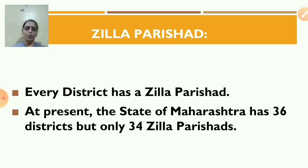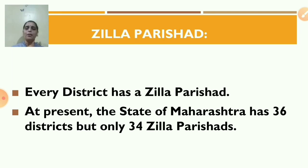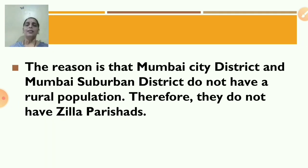And today we are going to learn Jilla Parishad. Every district has a Jilla Parishad. At present, the state of Maharashtra has 36 districts but only 34 Jilla Parishads, because Mumbai city district and Mumbai suburban district do not have a rural population. Therefore, they do not have Jilla Parishads.